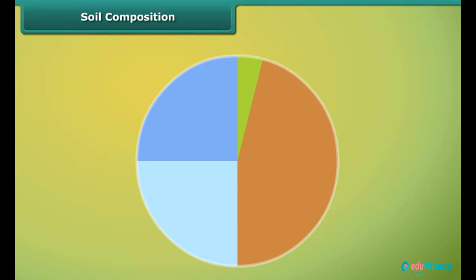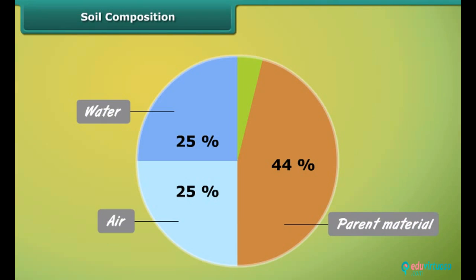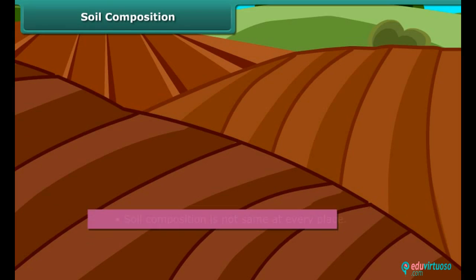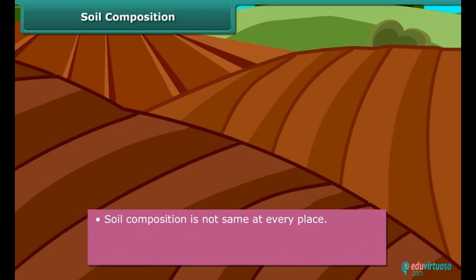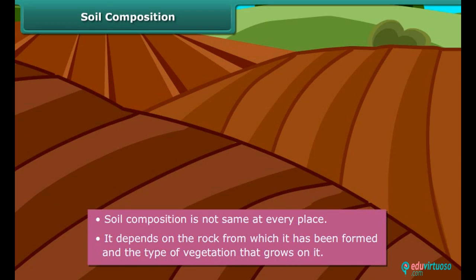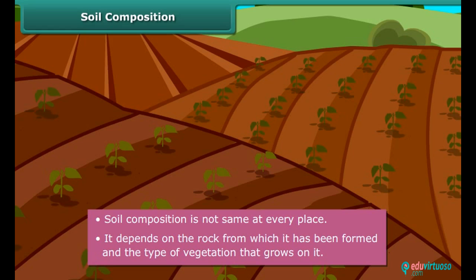Soil Composition. Soil is a mixture of water, air, parent material and organic matter. Over time these four components combine together to form healthy fertile soil. Don't think that soil composition is the same at every place. It depends on the rock from which it has been formed and the type of vegetation that grows on it.